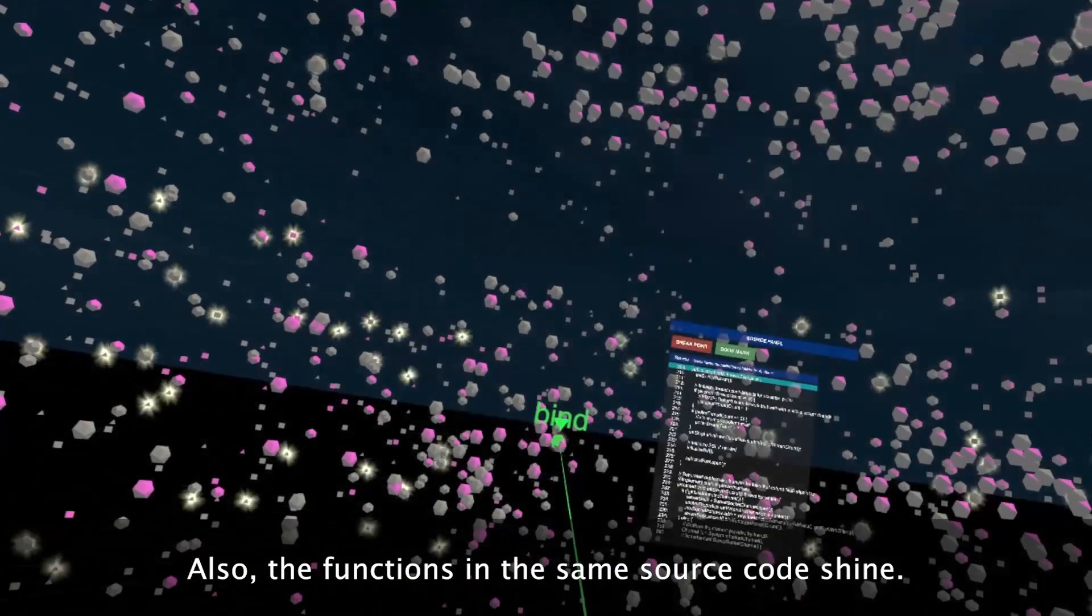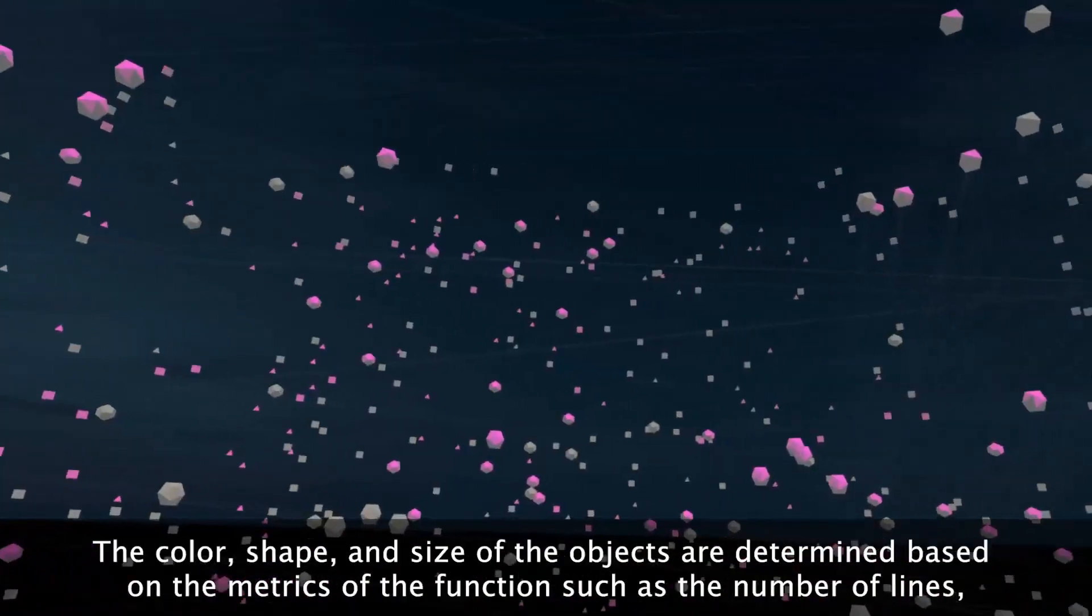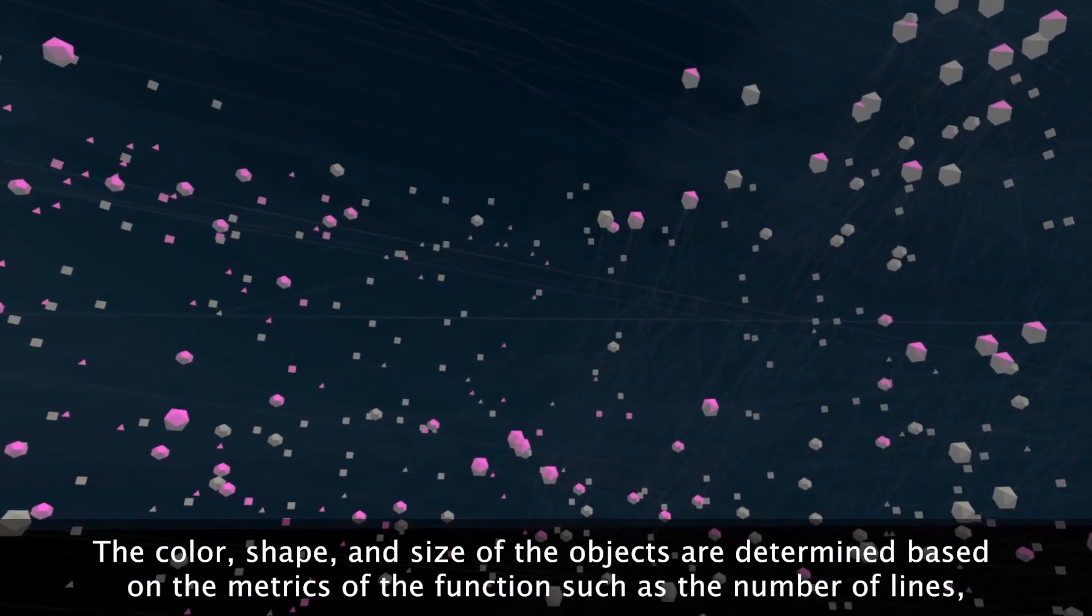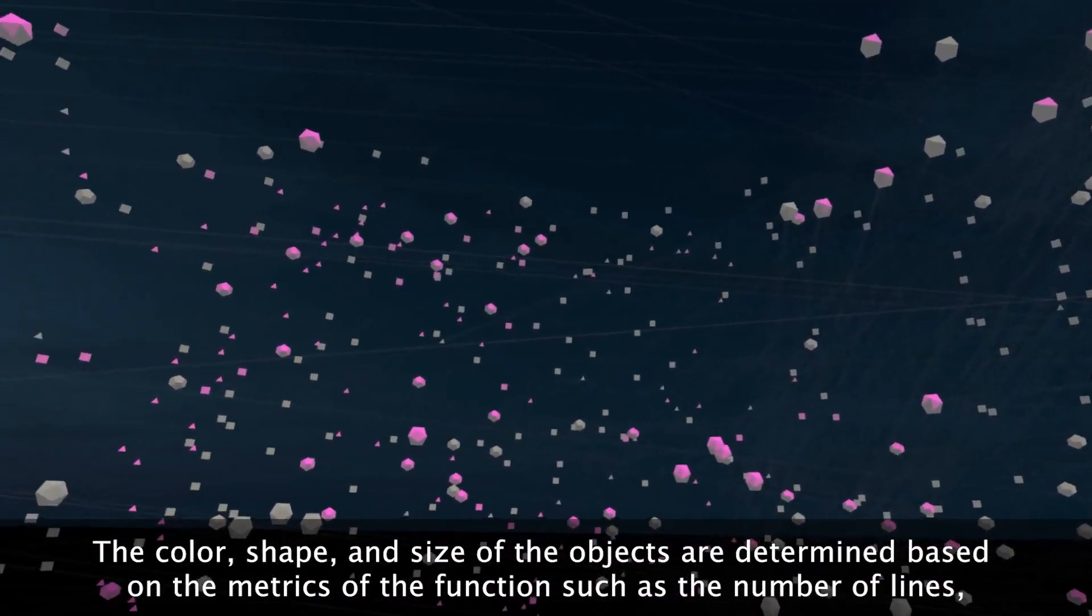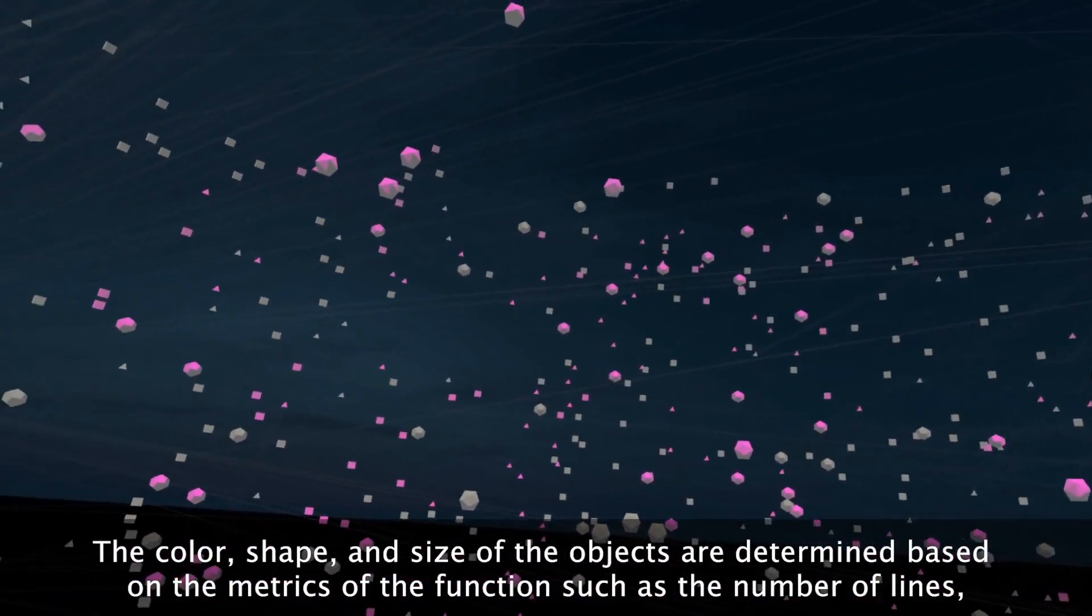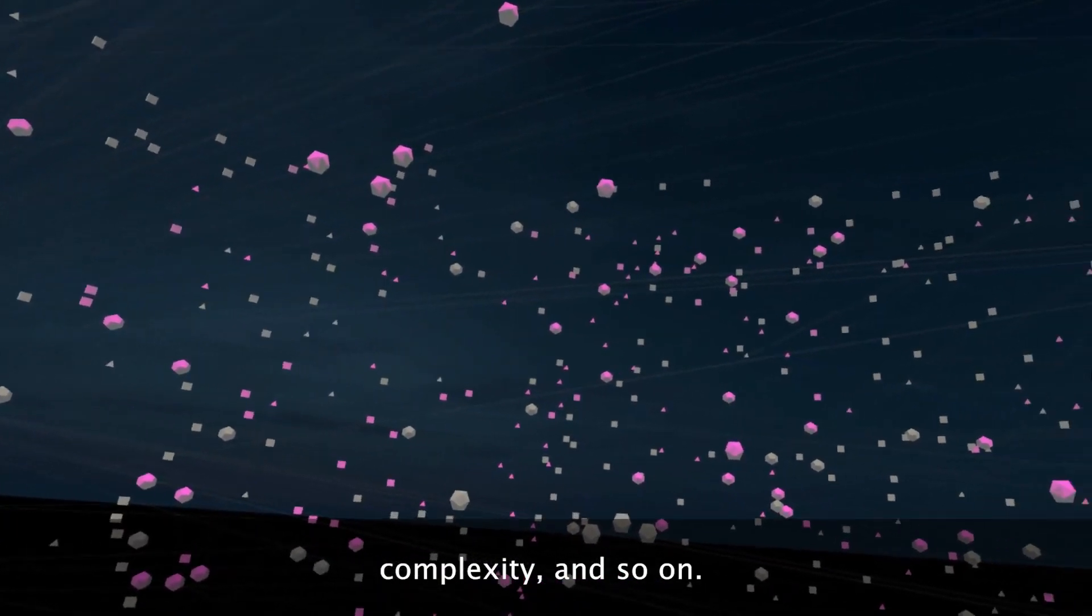Also, the functions in the same source code shine. The color, shape, and size of the objects are determined based on the metrics of the functions such as the number of lines, complexity, and so on.